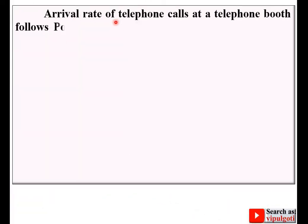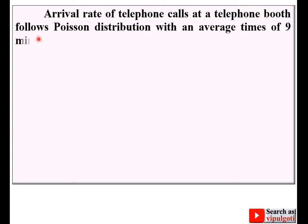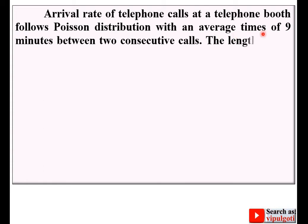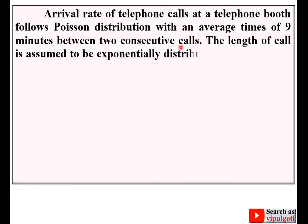Arrival rate of telephone calls at a telephone booth follows Poisson distribution with an average time of 9 minutes between two consecutive calls. The length of the call is assumed to be exponentially distributed with a mean of 3 minutes.